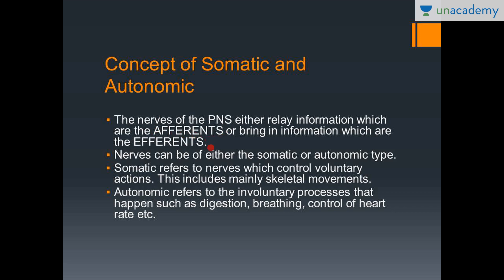The nerves that bring information from the central nervous system to the peripheral organs are called the efferent nerves. So the peripheral nervous system has two types of nerves: those that carry information from the organs to the brain, which are the afferents, and from the brain to the organs, which are the efferents. And the nerves can either be of somatic or autonomic type.